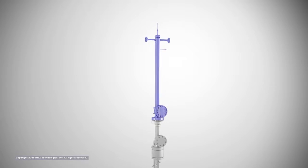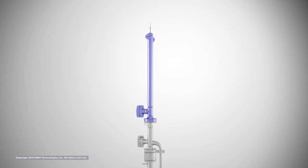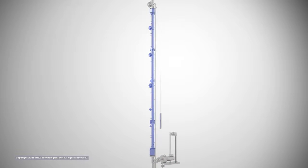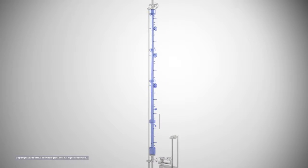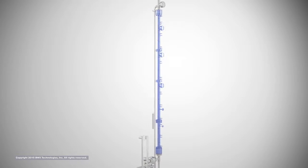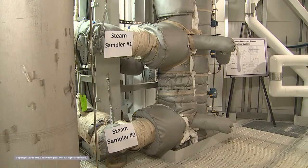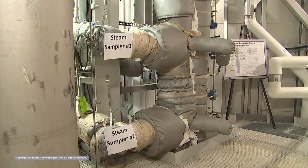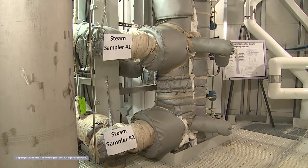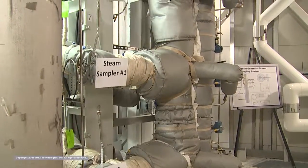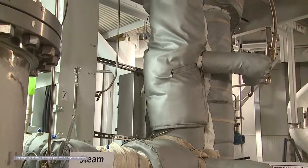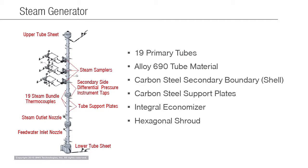The once-through steam generator is a straight tube design with counterflow. It produces superheated steam, exhibits four unique heat transfer domains, and features steam samplers at three elevations in the steam bundle to measure the moisture content of the steam during operational conditions and during variations in steam generator test conditions designed to investigate heat transfer.